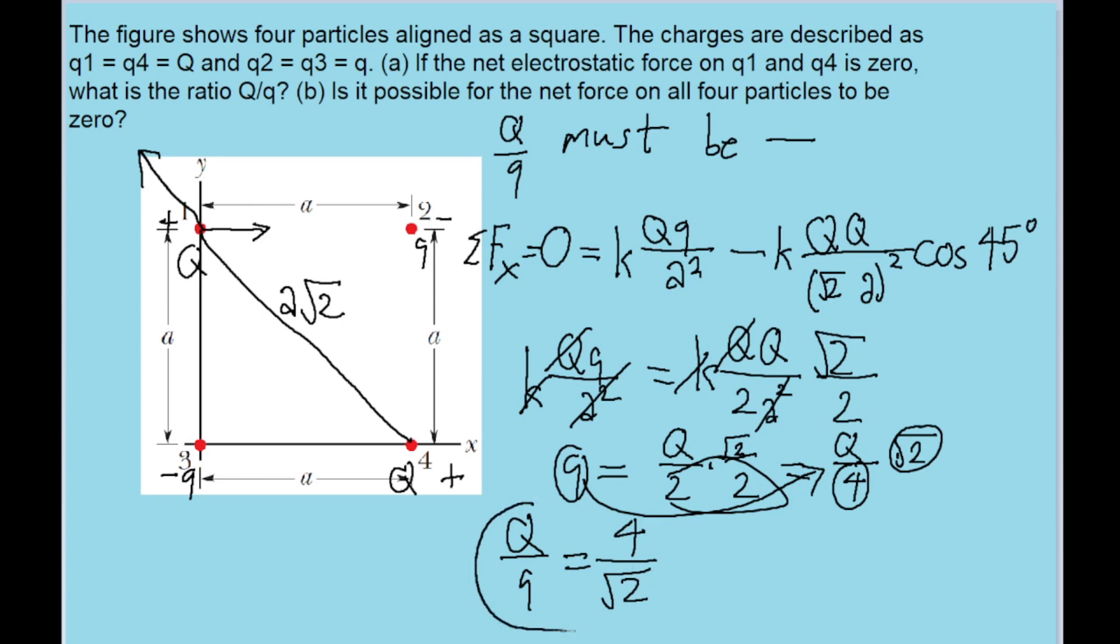So that means this is it. We've solved for big Q over little q and this is the ratio that it's equal to. If we use a calculator we can approximate this in more of a decimal form and we can see that this ratio is equal to 2.83. And as we established way back at the beginning of the problem, it must be negative. So the ratio is negative 2.83, and that's the ratio that the charges need to be at in order for charges one and four to be stationary.